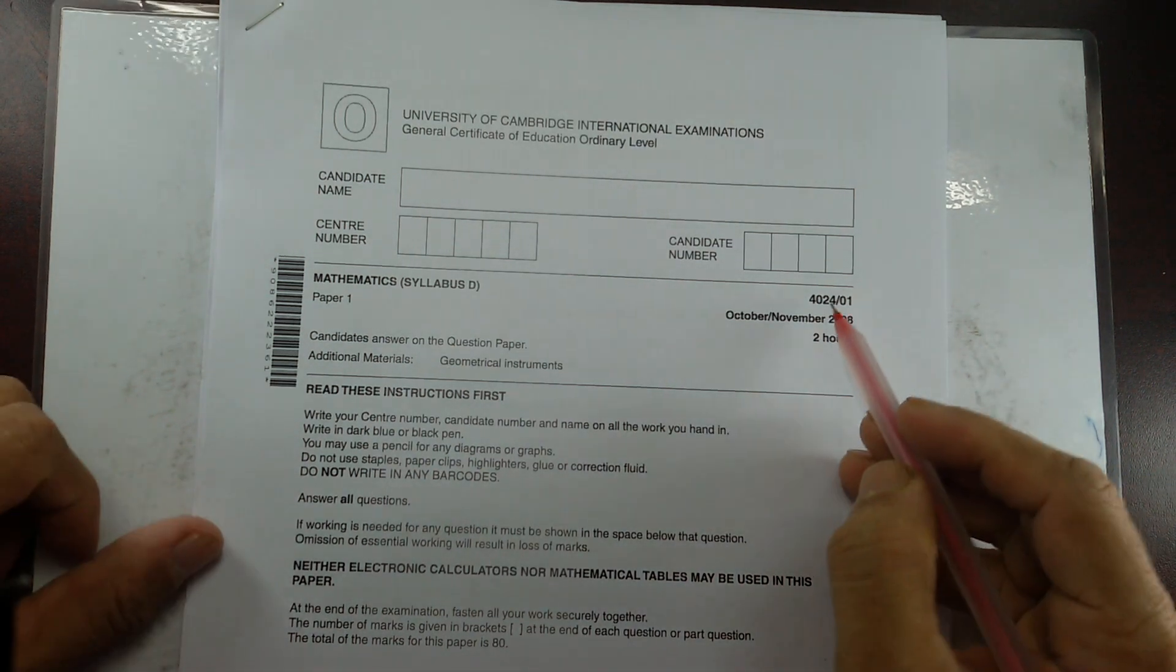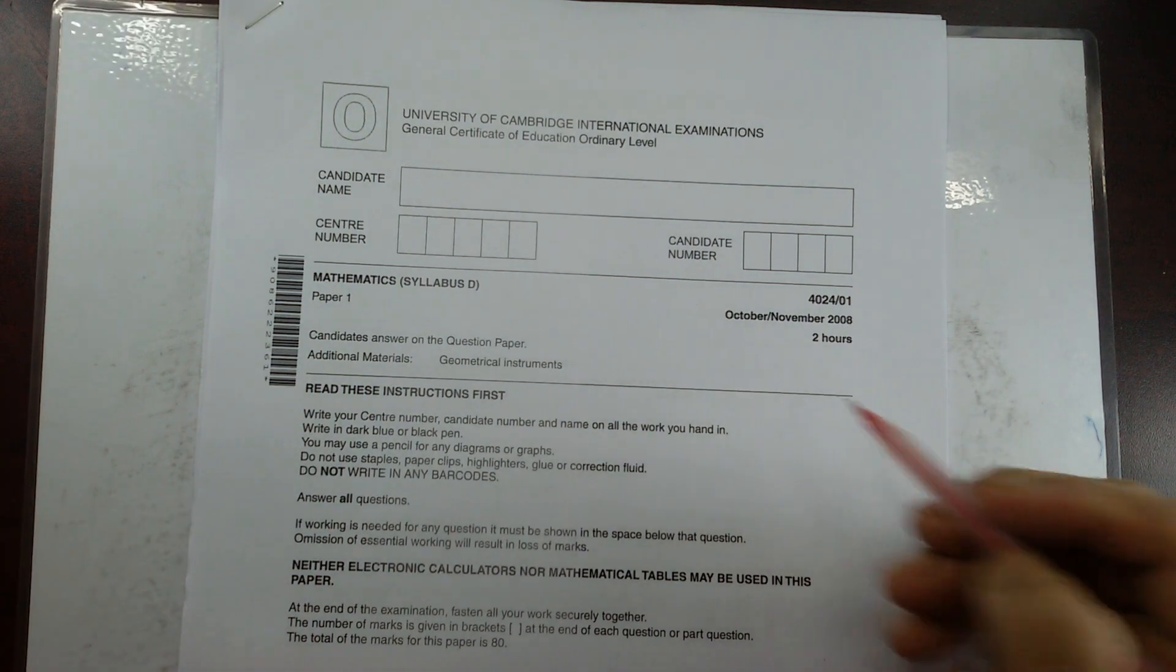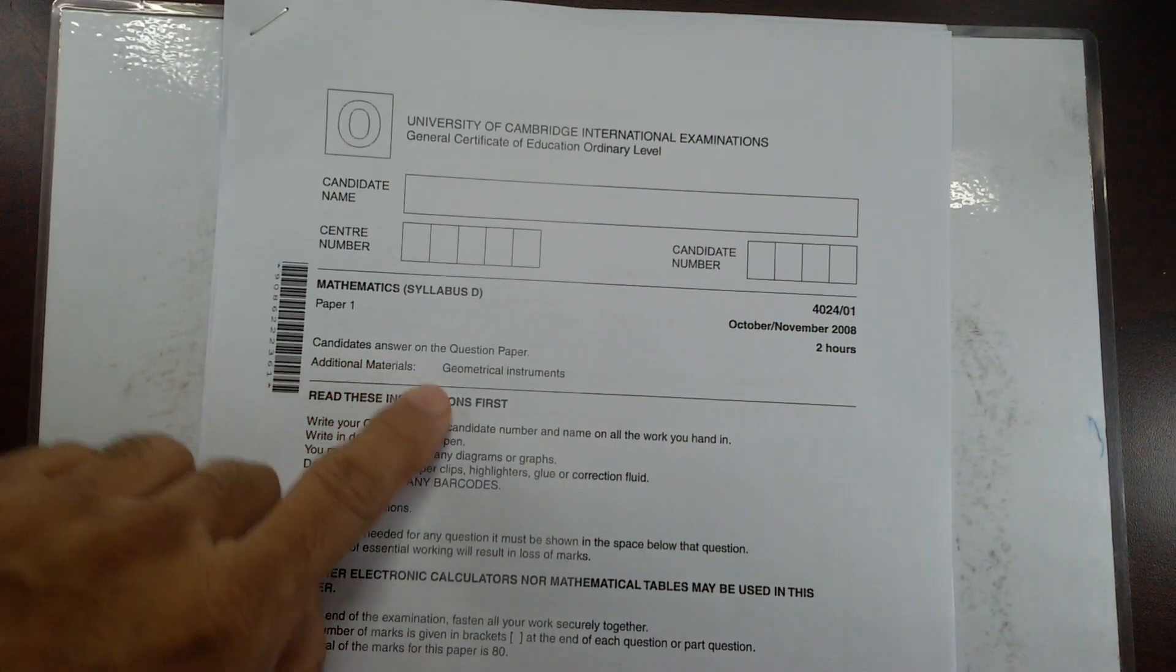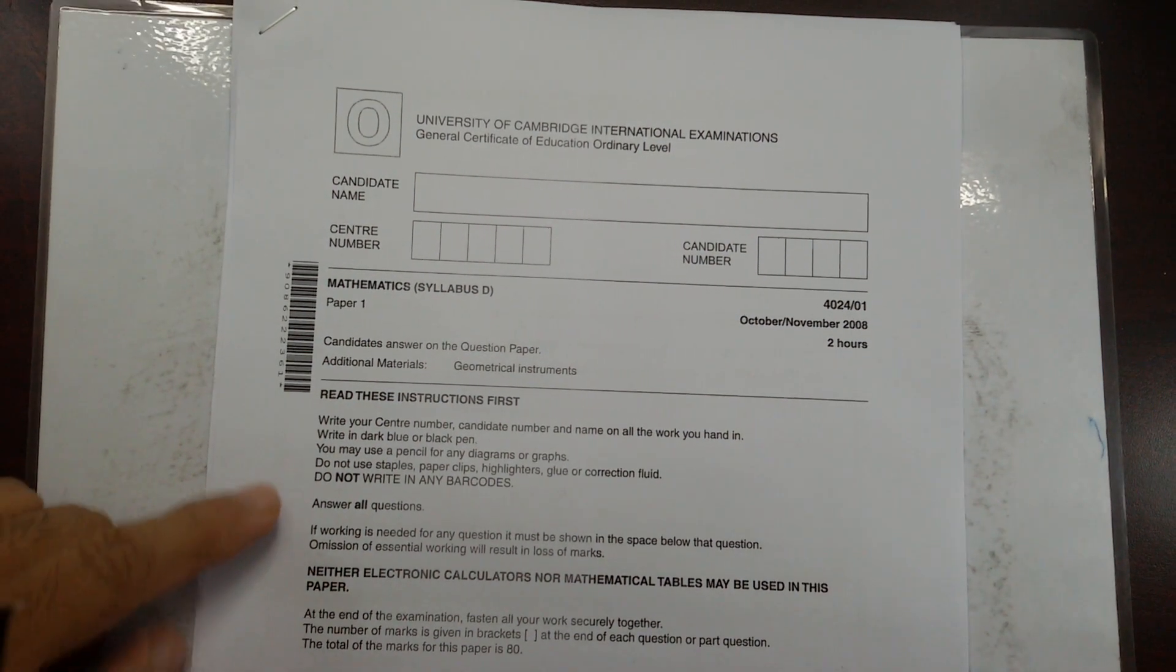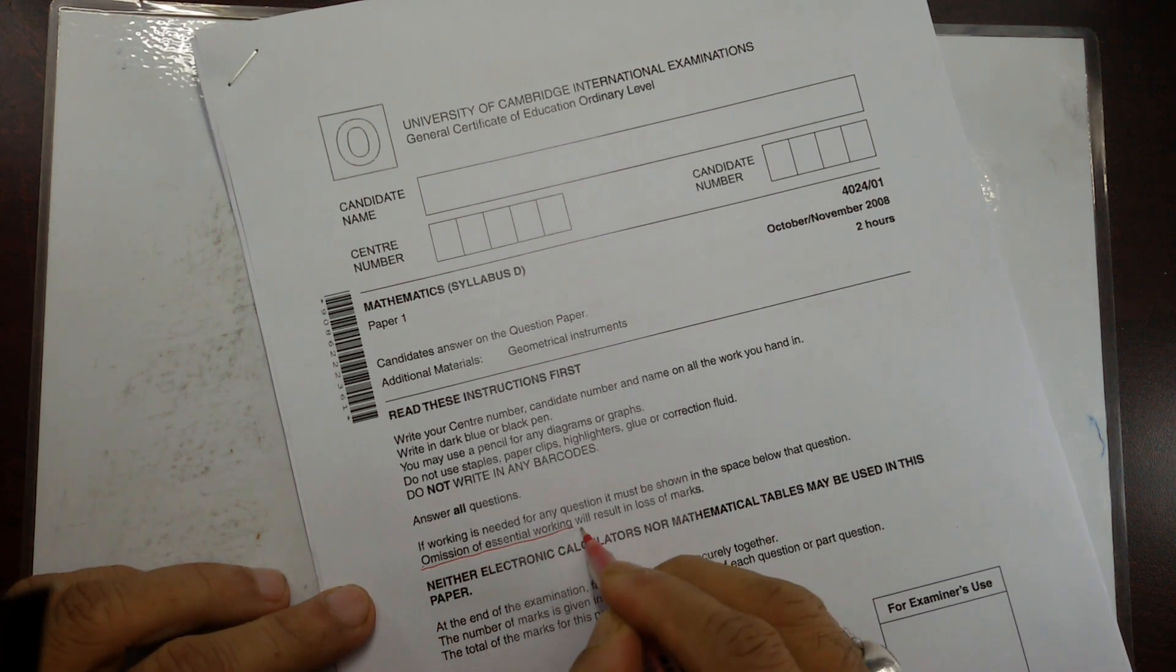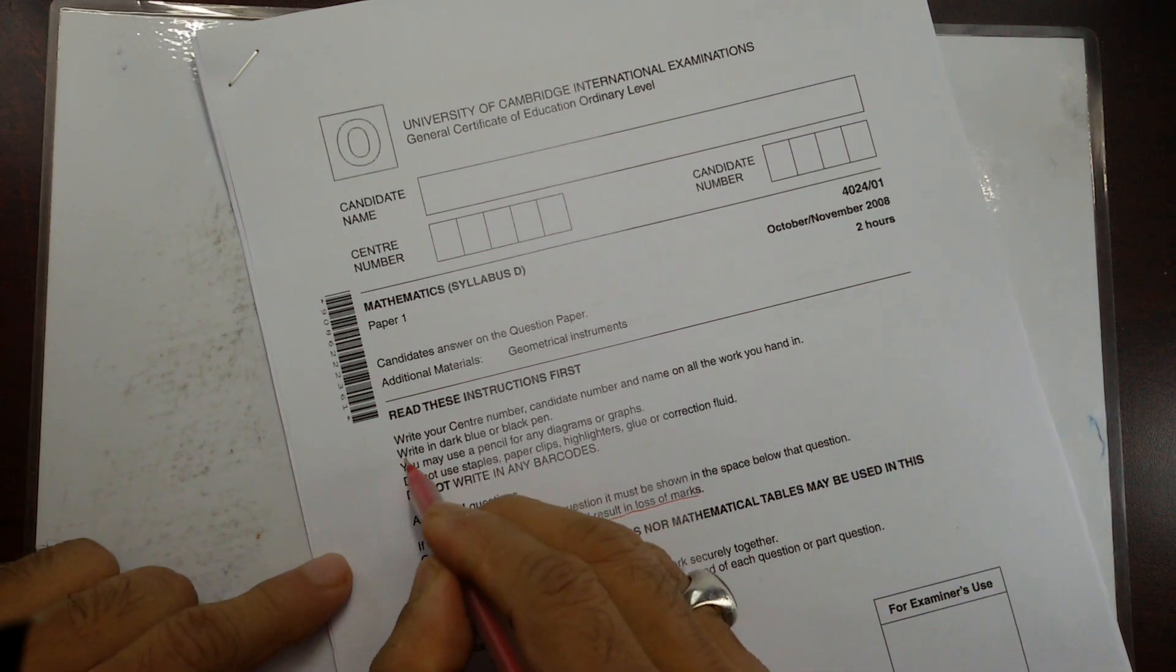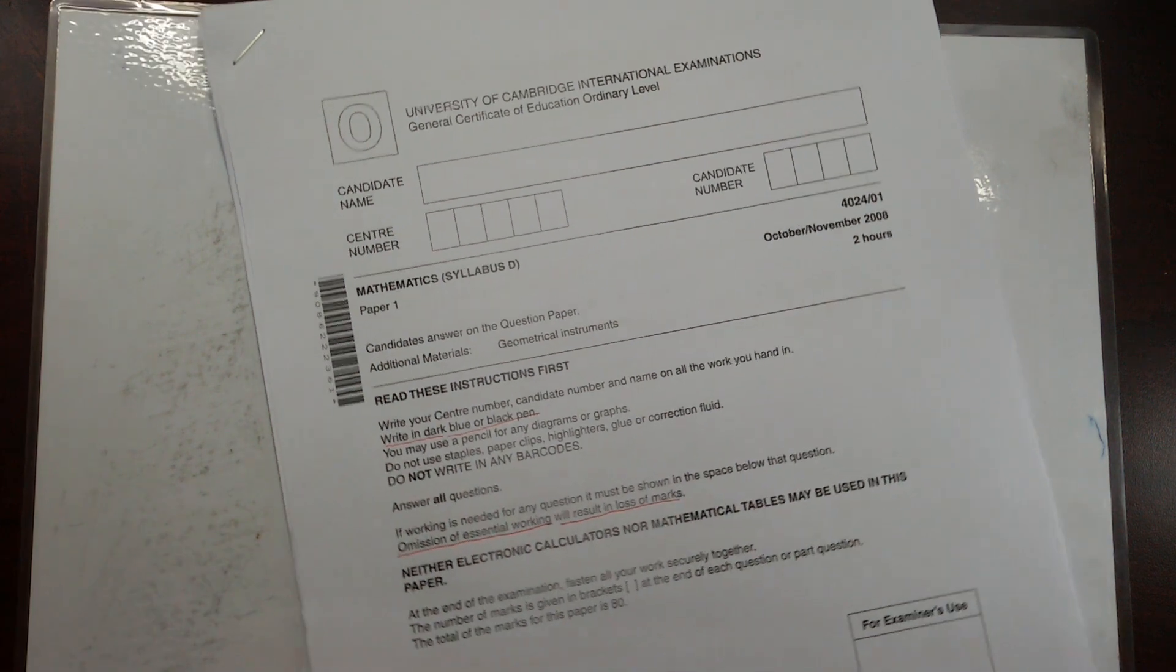Good morning. Let's solve 4024, paper 1, October November 2008. You know that that's non-calculator version. You are not supposed to use the calculator for this. One important point to notice over here, the instruction given: omission of essential working will result in loss of marks. I'm using red pen, but you're supposed to write in dark blue or black pen. So remember that.